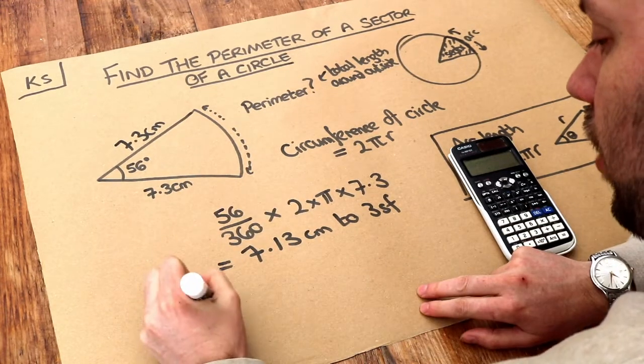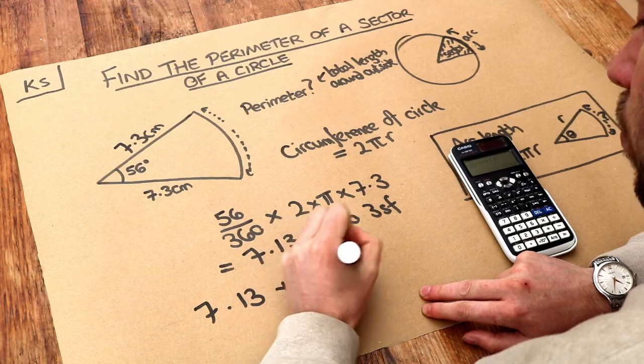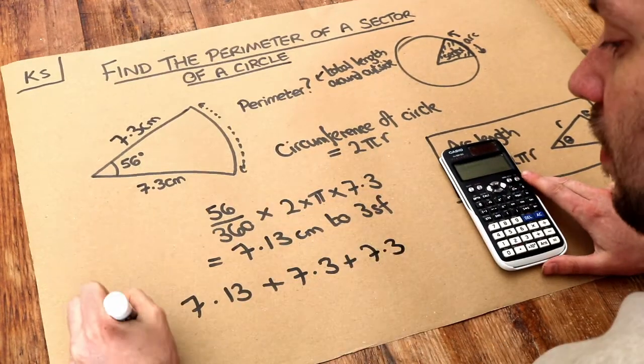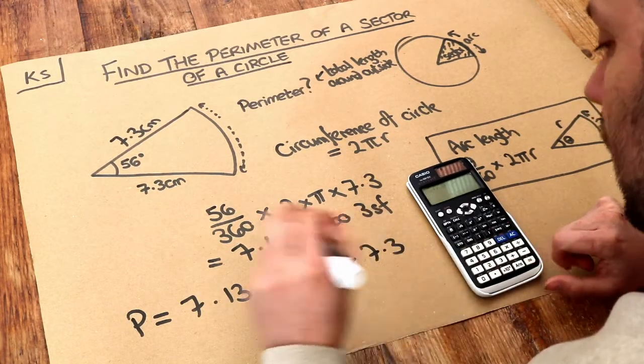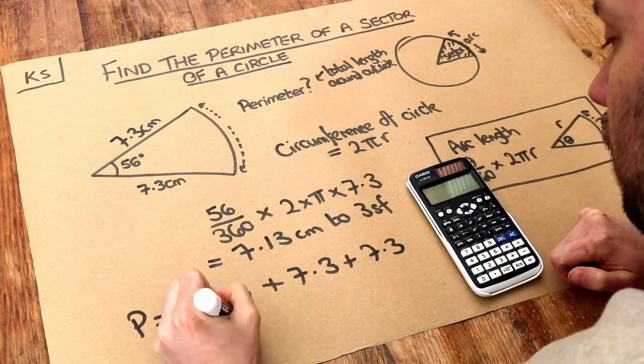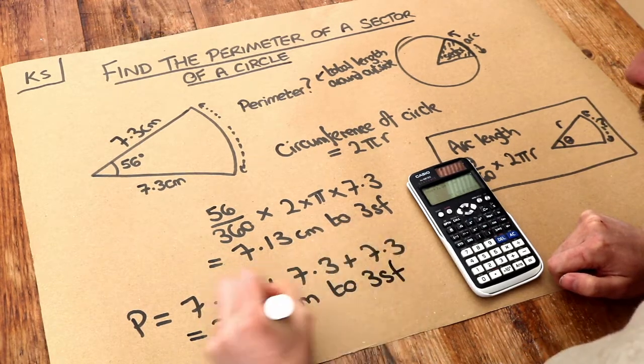We've got the 7.13, we're adding the 7.3, and we're adding the other 7.3. So that's the total perimeter. Add those together, and that gives you 21.7 centimetres to 3 significant figures. And that's the final answer.